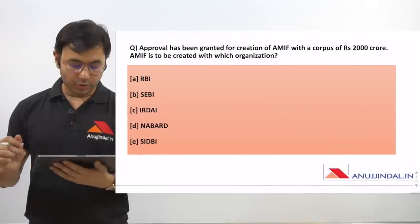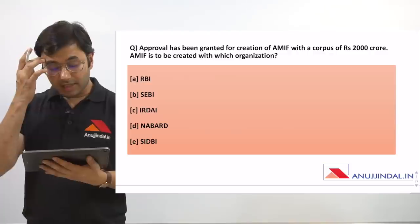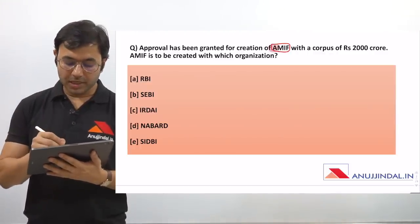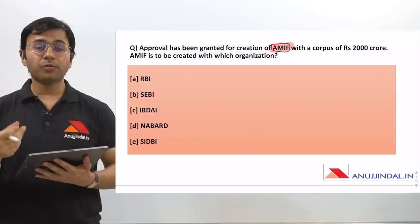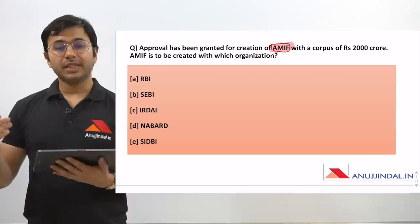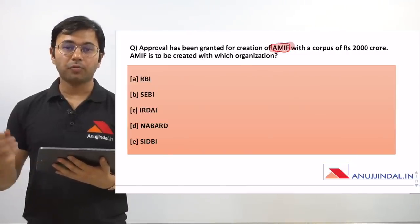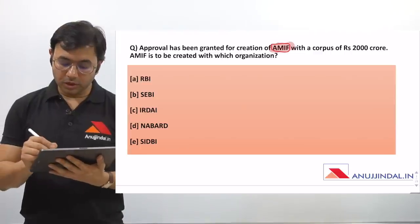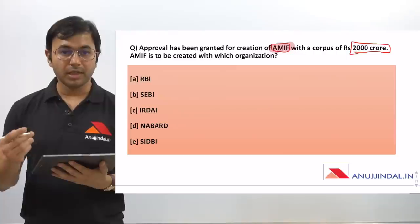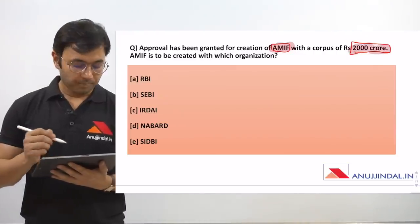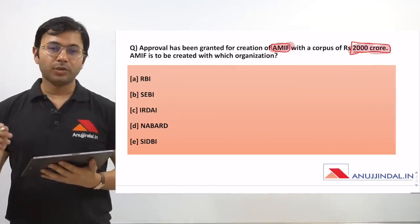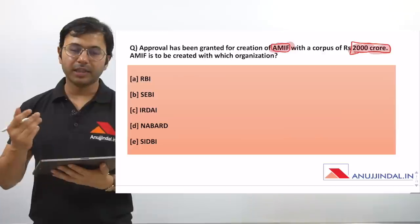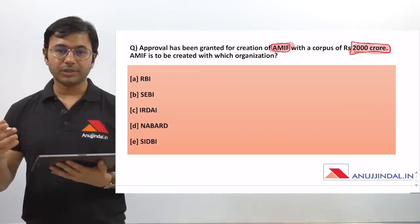Let's jump to the second question. Approval has been granted for the creation of AMIF. Provide the full form of AMIF if you know it. The examination normally follows the trend of giving acronyms which are often confusing for students. With a corpus of 2000 crore, this needs to be remembered — a question can also be framed around this figure. AMIF is to be created with which organization? The options are RBI, SEBI, IRDI, NABARD, and SIDBI.